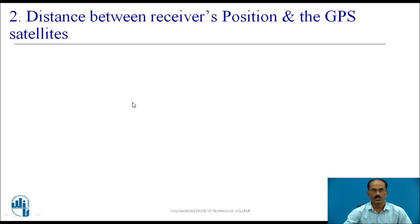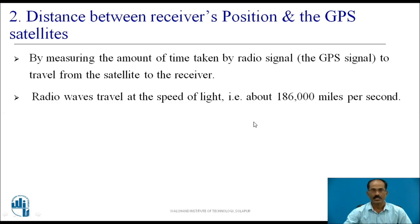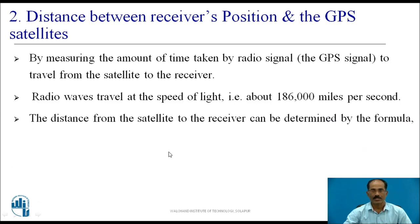The second requirement is the distance between the receiver's position and the GPS satellites. By measuring the amount of time taken by a radio signal — the GPS signal — to travel from the satellite to the GPS receiver, we can determine the distance. Radio signals travel at the speed of light, which is about 186,000 miles per second. The distance from the satellite to the receiver can be determined by the formula: Distance = Speed × Time. We know the speed of light, and we can measure the time it takes to travel from the GPS satellite to the GPS receiver.